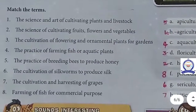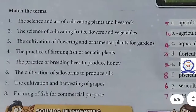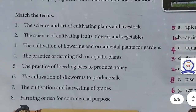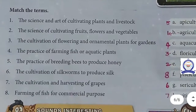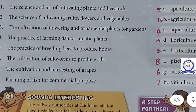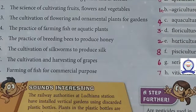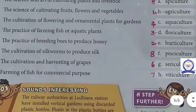The next question is one-word answers. The science of cultivating plants and livestock: Agriculture. The science of cultivating fruits, flowers, and vegetables: Horticulture. The cultivation of flowering and ornamental plants for gardens: Floriculture.